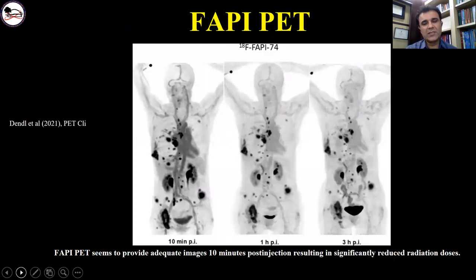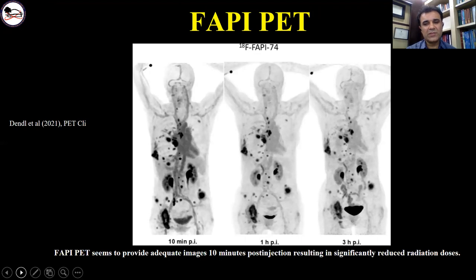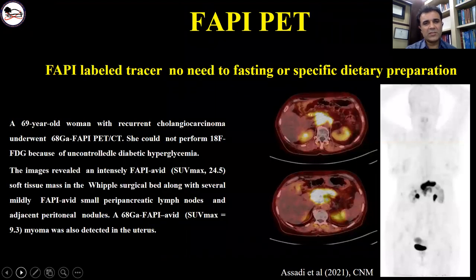One of the advantages of FAPI PET-CT is rapid tumoral uptake with fast background washout, resulting in low radiation burden to the patient — almost half the radiation exposure compared to FDG PET-CT. Another advantage is that FAPI PET-CT is independent of fasting or specific dietary preparation. For example, this case presented with uncontrolled diabetic hyperglycemia and underwent FAPI PET-CT with FAPI-46, which showed intense uptake in a post-surgical belt line with myoma in the uterus.